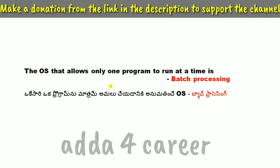The OS that allows only one program to run at a time is related to batch processing. In batch processing, programs are executed one by one. So the answer involves batch processing, where tasks are queued and executed sequentially.